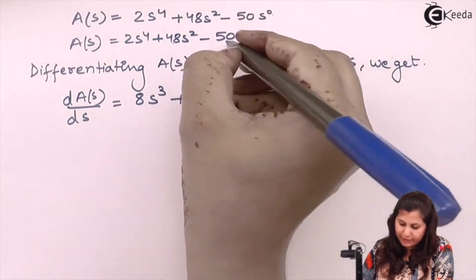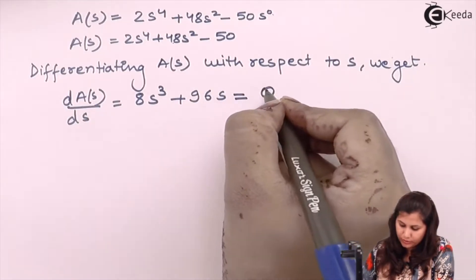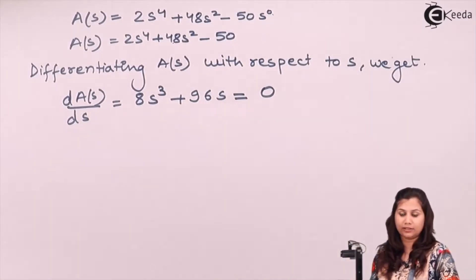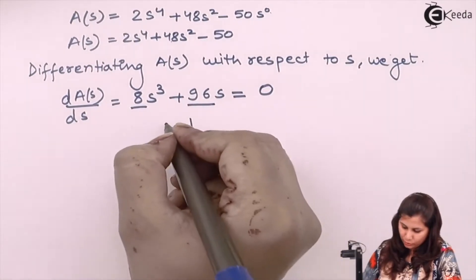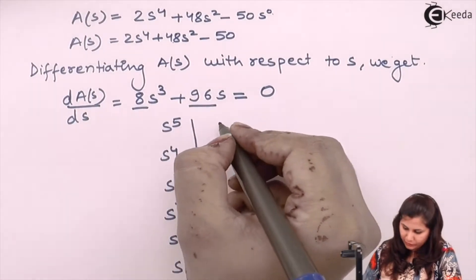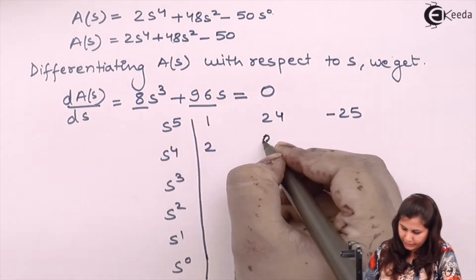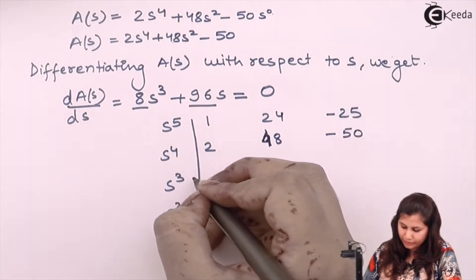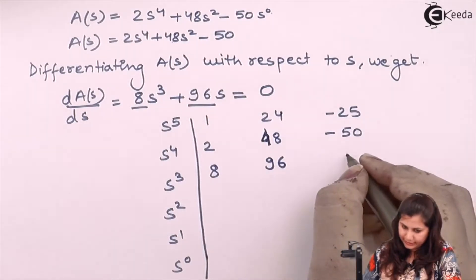We equate this differentiated equation to zero and replace the zero row coefficients with the new coefficients. So the Routh array has: S5 row: 1, 24, minus 25; S4 row: 2, 48, minus 50; and the S3 row now becomes: 8, 96, 0.